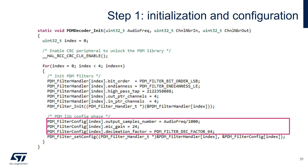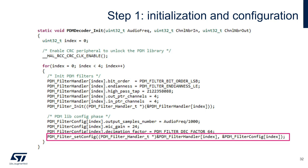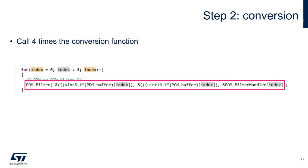We do the same for the configuration, fill the parameters, and call the configuration function. At this point, when the data is available, we can call the conversion function. We are calling the function for each microphone we want to convert, passing the parameters we analyzed previously. So let's unroll this loop and see what happens to the buffers at each call.